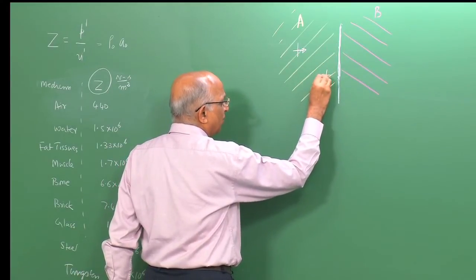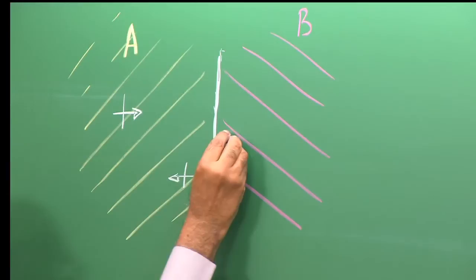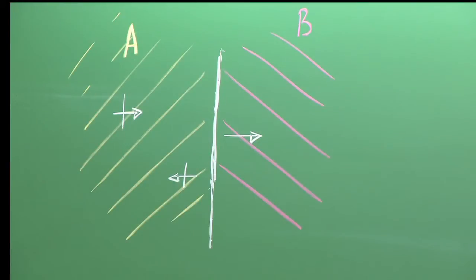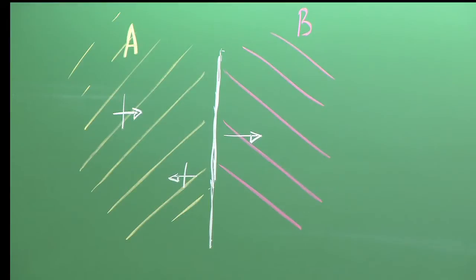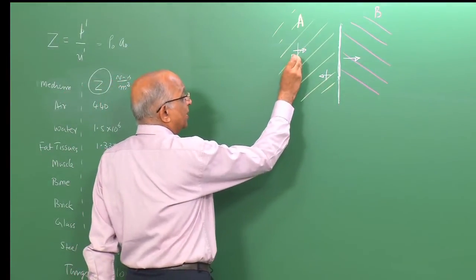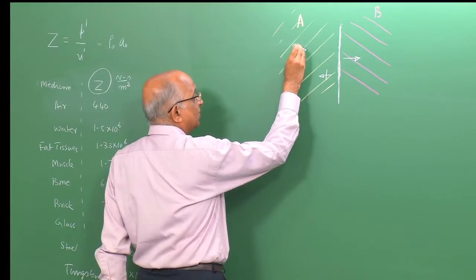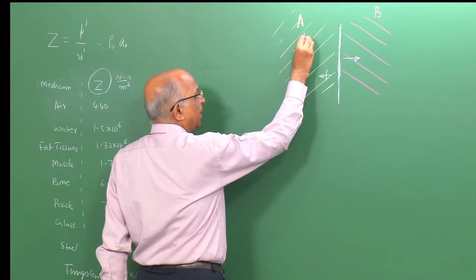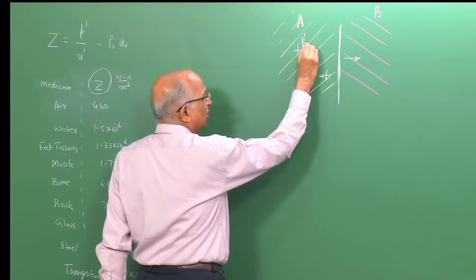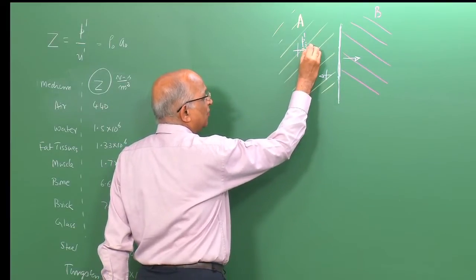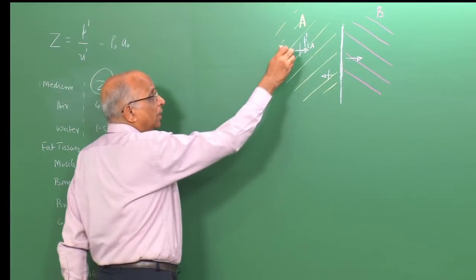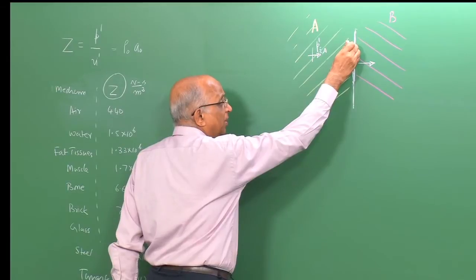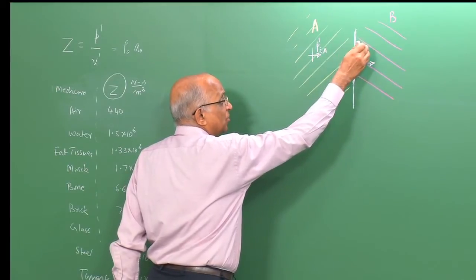How much of this pressure wave gets reflected and how much gets transmitted into the second medium? Let us assign some numbers. The pressure wave has an over-pressure p_i prime, which is incident on the surface in medium A.